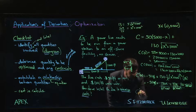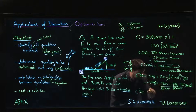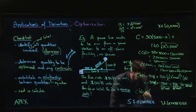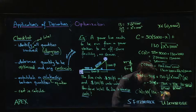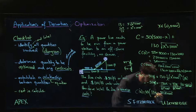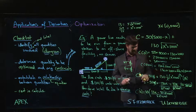Correcting C'(x): pulling out 10 gives [13x − 5√(x² + 1000²)] over √(x² + 1000²). Setting the numerator equal to zero for the critical number: 13x = 5√(x² + 1000²). Squaring both sides: 169x² = 25(x² + 1,000,000). So 144x² = 25,000,000.